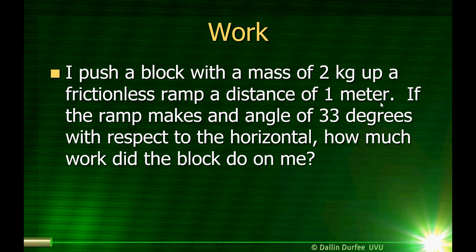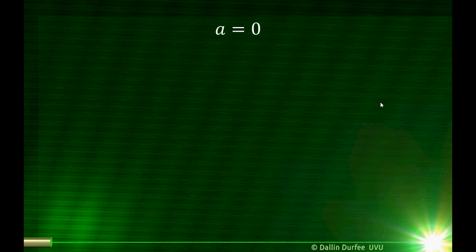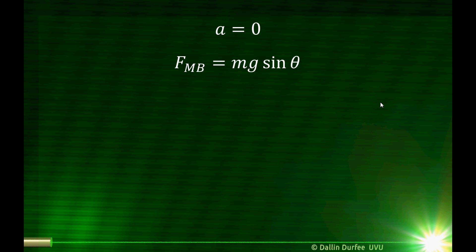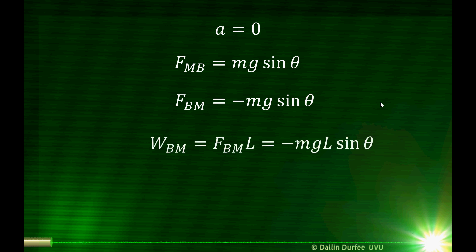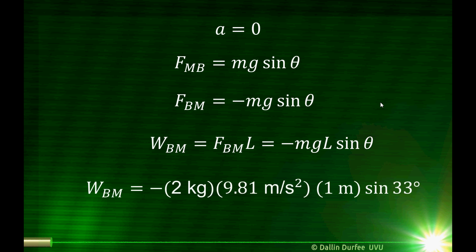Let's do a similar problem. I push a block with a mass of 2 kg up a frictionless ramp a distance of 1 m. If the ramp makes an angle of 33 degrees with respect to the horizontal, how much work did the block do on me? This is the same setup, but now I'm asking how much work did the block do on me. It's zero acceleration, constant velocity, so the force I push on the block with must cancel the component of gravity along the ramp. But now we want the force of the block on me, not the force of me on the block. Newton's third law says equal and opposite forces — if I push on the block with mg sine theta, the block pushes on me with negative mg sine theta. So the work done by the block on me is negative mg times L sine theta — just opposite the work that I did on the block.